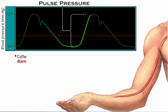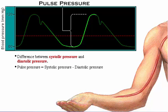Pulse pressure represents the difference between the systolic pressure and the diastolic pressure. Pulse pressure equals systolic pressure minus diastolic pressure. Pulse pressure is the throb that you feel when you take your pulse.